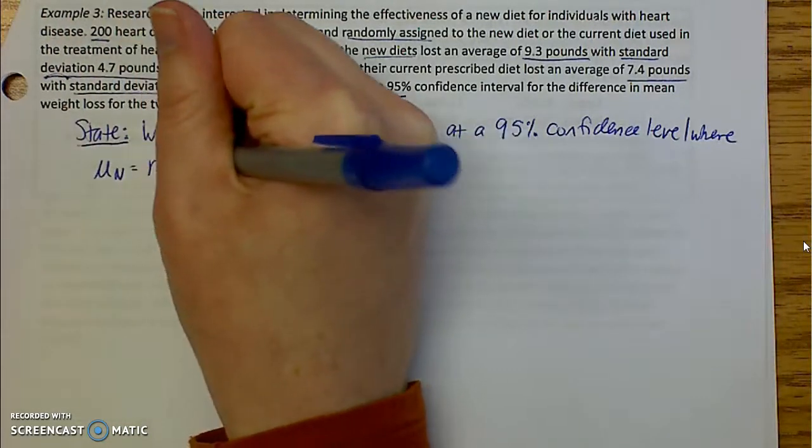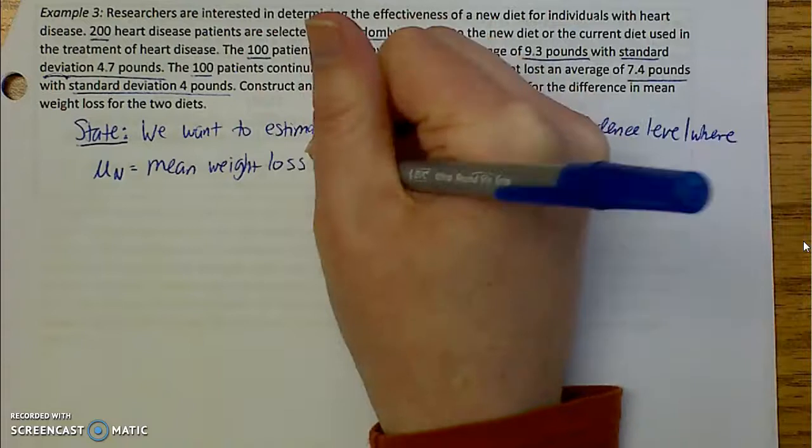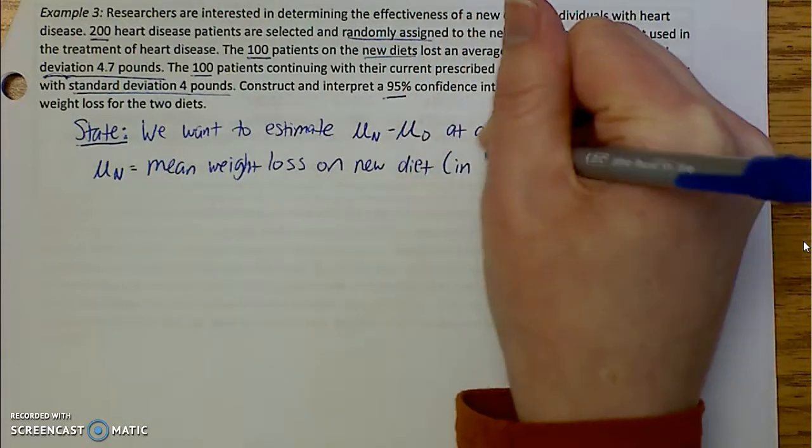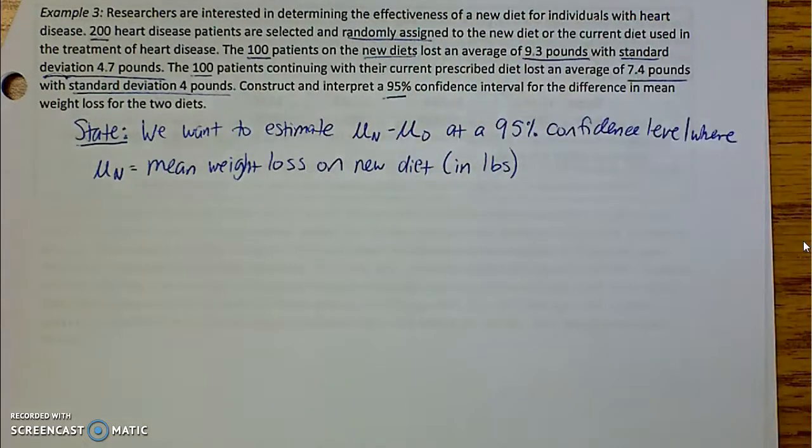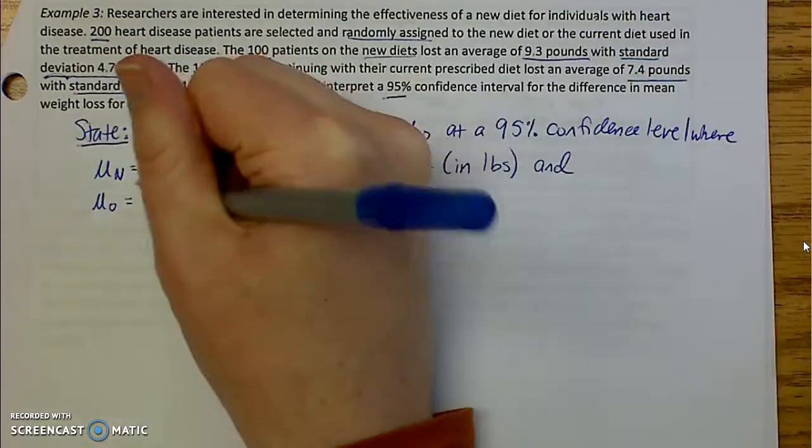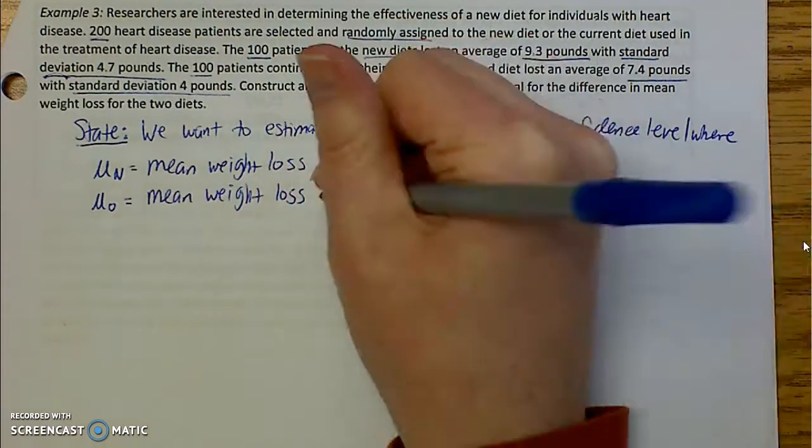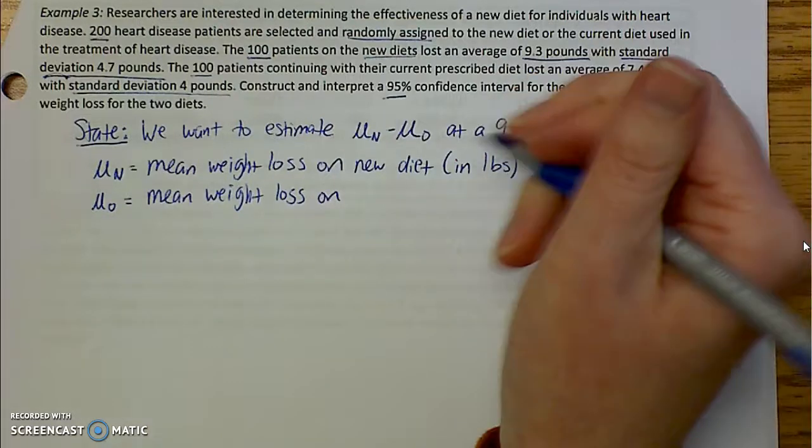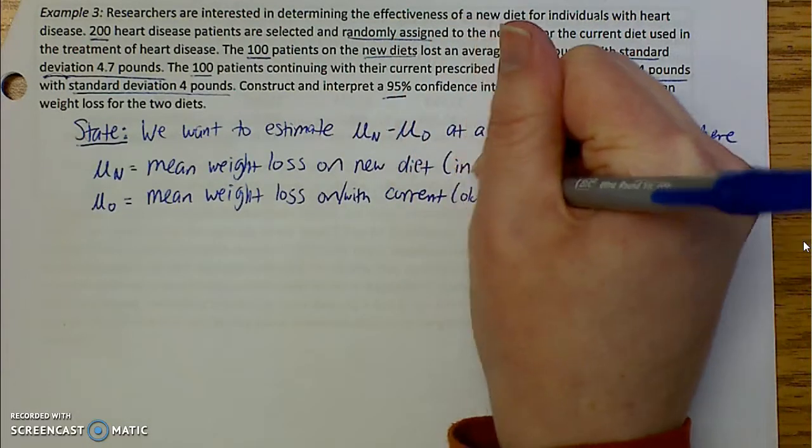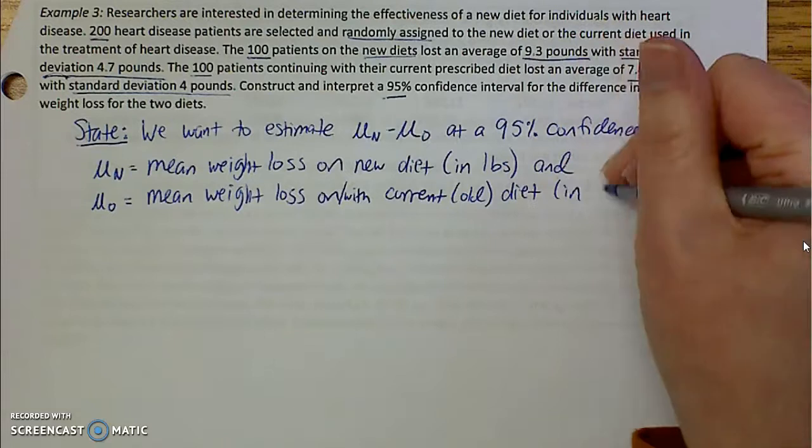Where, and now I need to define my parameters. μ sub n is the mean weight loss on the new diet, and I am going to add in pounds, just so I am aware of what units I am using. And μ sub o is going to be the mean weight loss on, or I should say with, their current, aka their old, diet. Again, in pounds.